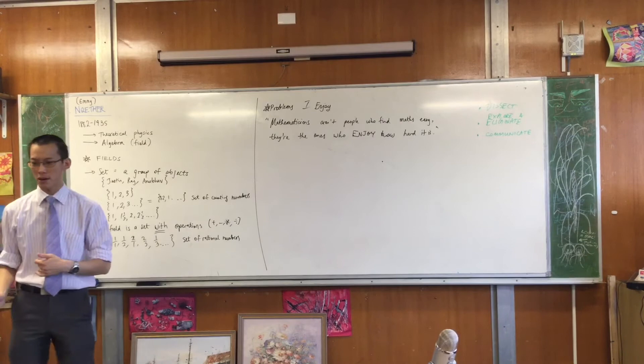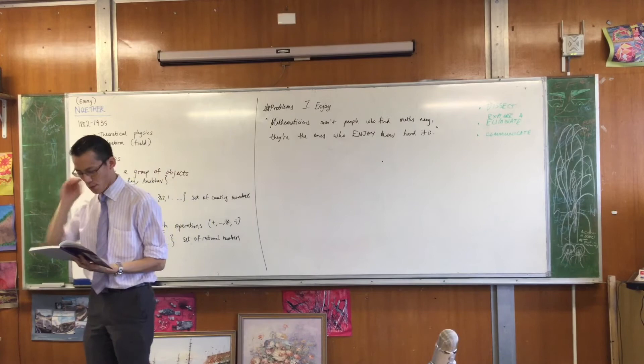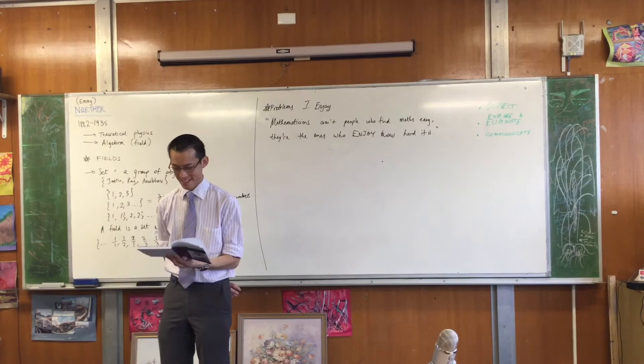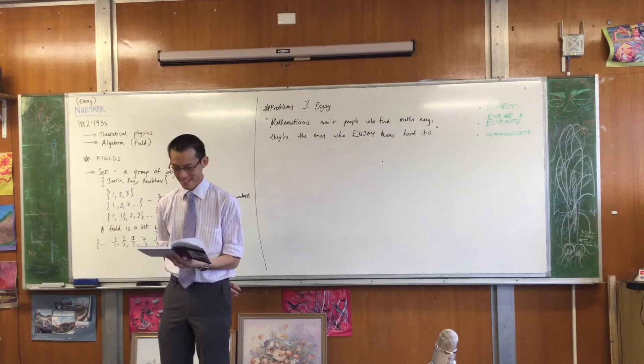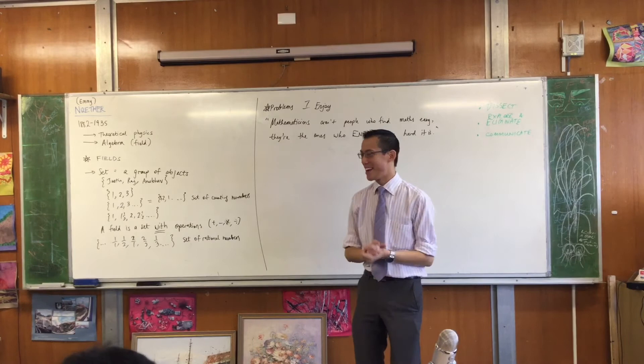All right. So now I'm going to borrow Johnson, can I borrow your book for a minute? The question I'm going to ask us to do together is question four. Under problems I enjoy, question four, it's such an archetypal mathematics question about the ages of three children. So I'm going to give you a couple of minutes to read this question to yourself, to think about it, and to think about how you would start it.